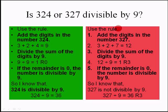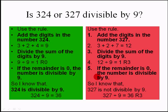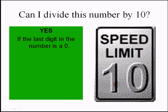Let's take 327. Use the rule: add the digits — 3 plus 2 plus 7 is 12. Divide the sum of the digits by 9: 12 divided by 9 leaves a remainder of 3. The remainder is not 0, so I know that 327 is not divisible by 9, because it leaves a remainder.